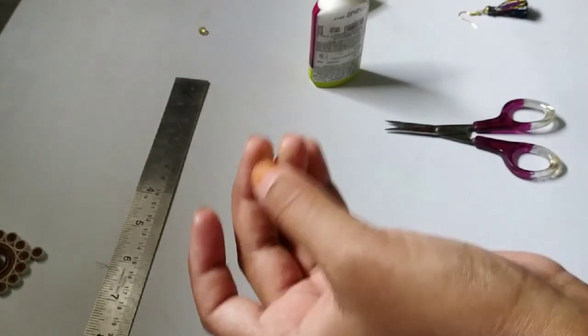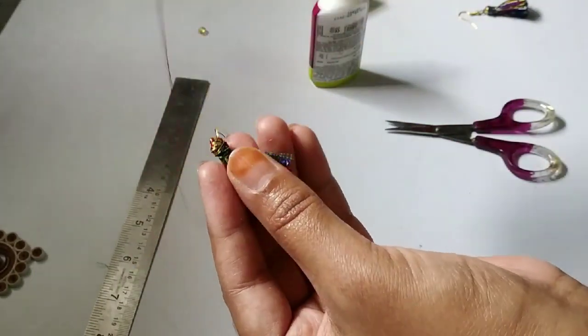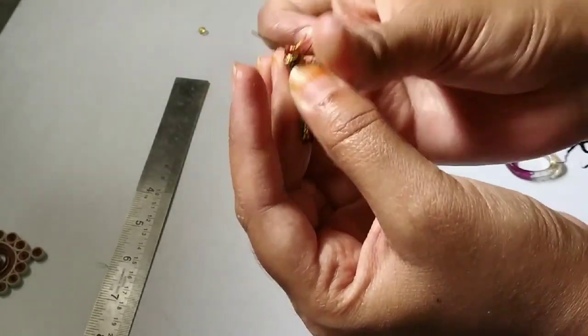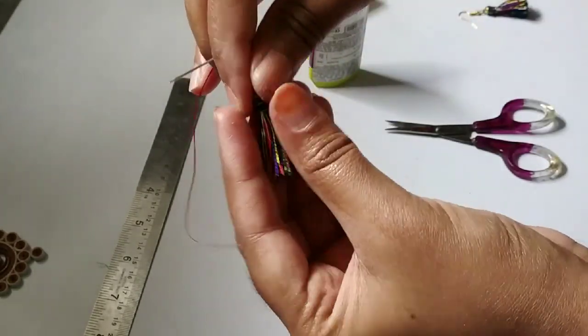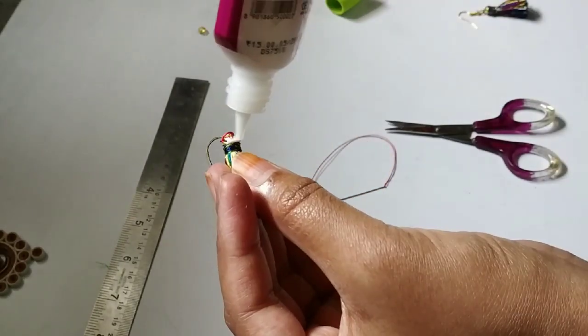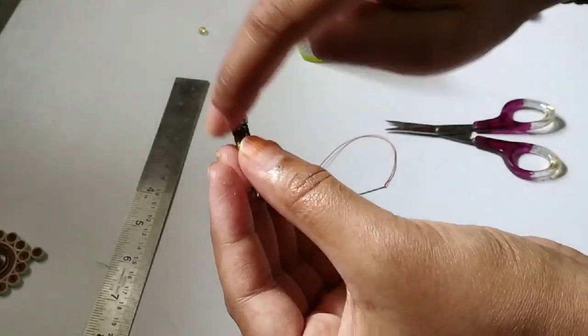So once the wrapping is done, now take a needle and thread again and we need to get to the center from the bottom of the earring. Just tie the knot around to make sure that it is more stronger. After tying the knot,